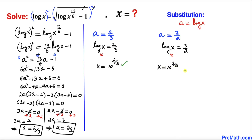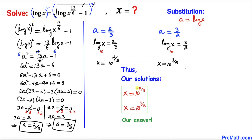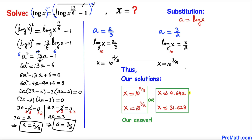These are our two solutions: x equals 10 to the power 2 over 3 and x equals 10 to the power 3 over 2. Converting to decimal notation, x is approximately equal to 4.642 and the other value is approximately 31.623. Thanks for watching and please don't forget to subscribe to my channel for more exciting videos. Bye.